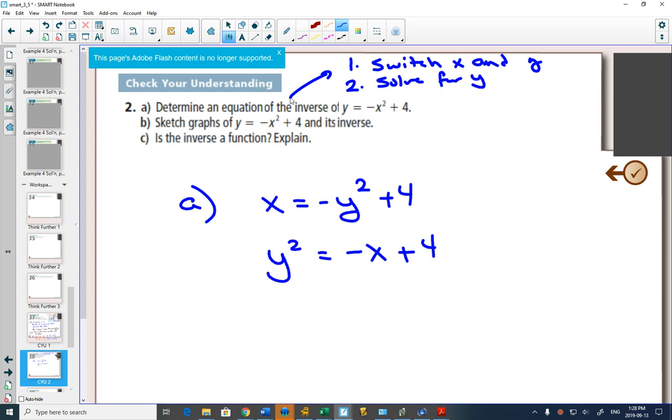How do I get rid of something squared? I take the square root. Taking the square root, though, this is where we have to remember whenever we take the square root of both sides, we add a plus or a minus. So in the end, we get y equals plus or minus the square root of negative x plus 4.